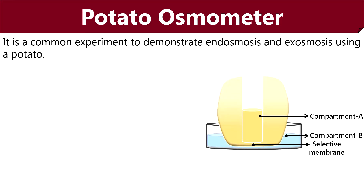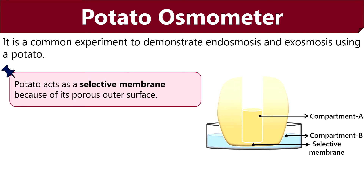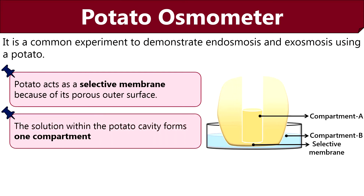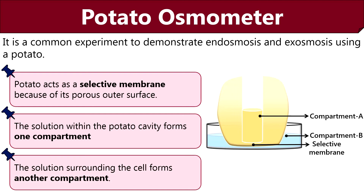Now let us discuss what is a potato osmometer. Using a potato osmometer, we can study or demonstrate the process of osmosis in a living system. In this experiment, a potato is used to study both endosmosis and exosmosis. Here the cell wall of the potato acts as a semi-permeable membrane. The solution within the cavity of the potato tuber forms compartment A, and the solution surrounding the potato tuber forms compartment B.